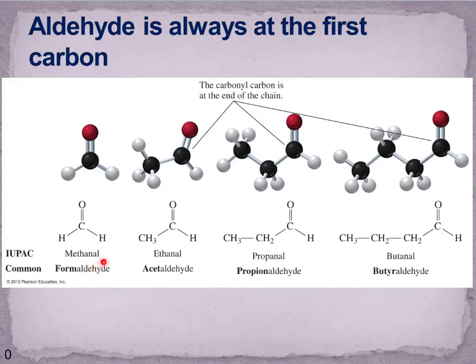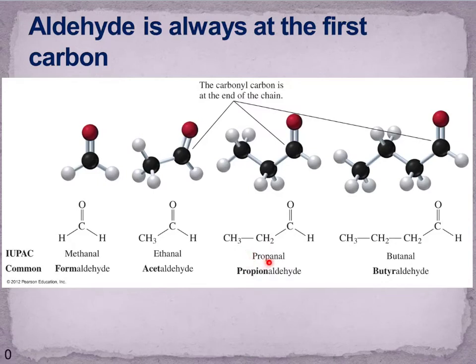The '-al' ending — as opposed to the '-ol' for alcohols — tells us we're dealing with an aldehyde. There are also common names: formaldehyde is the same as methanal, acetaldehyde is ethanal, and so on. You don't need to memorize the common names, but if you see them in a problem you should recognize them. Given a name like propanal, you should be able to identify a three-carbon chain with a carbonyl group on a terminal atom as the only matching structure.